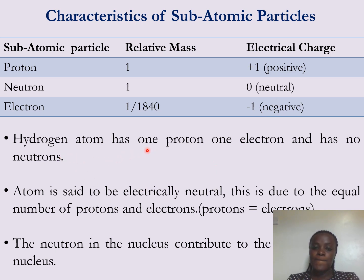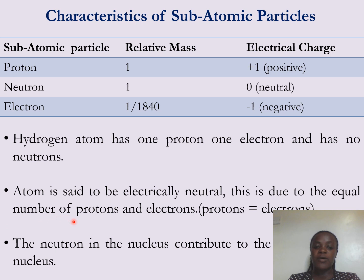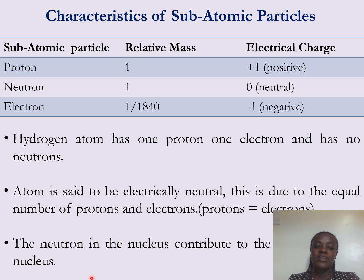The hydrogen atom is the first element. It has one proton, one electron, and no neutron. An atom is said to be electrically neutral due to the equal number of protons and electrons — the number of protons is always equal to the number of electrons. Neutrons in the nucleus contribute to the stability of the nucleus because they have no charge.